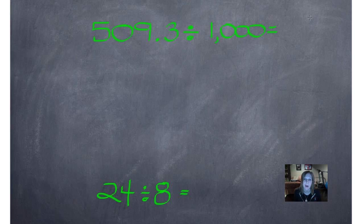So it's the same way with those decimal numbers up there. 509.3 divided by 1000. Whatever answer we have, it's going to be less than 509 for sure because we're dividing 509 into 1000 parts.